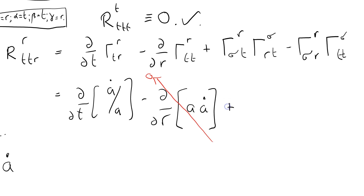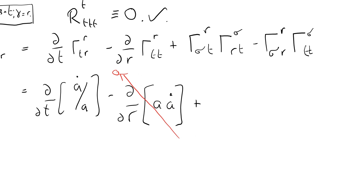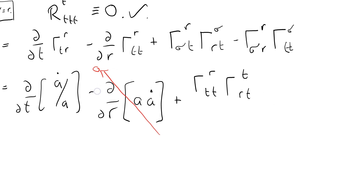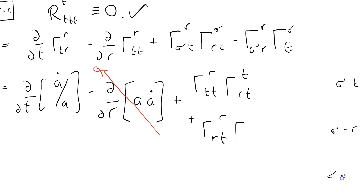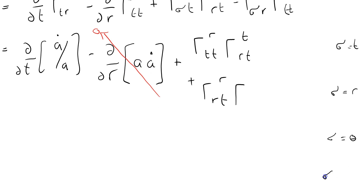Now let's have a look at the next terms. We've got to expand these cross terms. I may as well just do it all: sigma equals T gives Christoffel(R,T,T) times Christoffel(T,R,T), plus Christoffel(R,R,T) times Christoffel(R,R,T). Then sigma equals R, and then sigma equals theta, and the bottom one will be sigma equals phi.